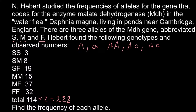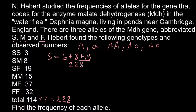Now we can count all the S alleles. We have six alleles from the SS homozygous individuals, eight alleles from the heterozygous SM individuals, and 19 alleles from another genotype. So we have six plus eight plus 19, and we divide this number by the total number of alleles, which is 228. The frequency of the S allele is 0.145.